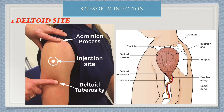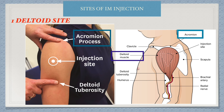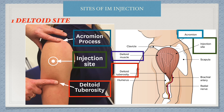Let's check the sites of IM injection. The first one is the deltoid site — we give the injection into the deltoid muscle. After making the patient relax with elbows slightly flexed, palpate the acromion process. Then, below three finger-widths from the acromion process and above the deltoid tuberosity, assume a triangular area. The middle of this triangular area will be the site of injection. The deltoid tuberosity is the point of attachment of the deltoid muscle over the humerus.